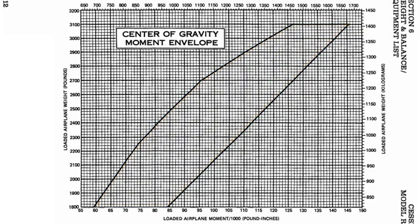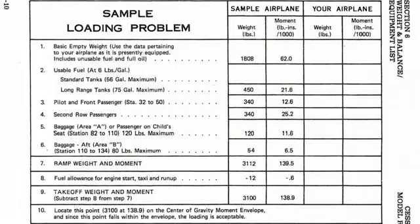Let's go back to our own loading problem. Cessna provided an example, but we're going to do our own because we have our own weights, and most importantly our airplane has its own specific weight and moment. In the US, every FAA-approved airplane has been weighed by the FAA to determine its moment. One of the documents required when flying is the weight and balance document for that specific airplane.